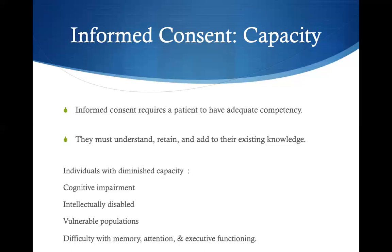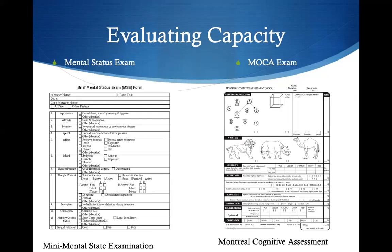How would you evaluate an individual's capacity prior to obtaining consent? We have ways to evaluate that — the mental status exam as well as the MOCA exam. Research indicates that the MOCA exam is actually more sensitive in helping evaluate whether an individual is capable and has the capacity to make an informed decision, so keep that in mind.